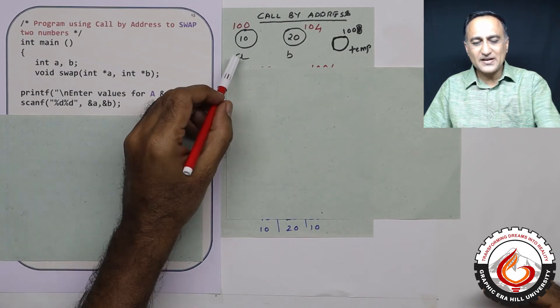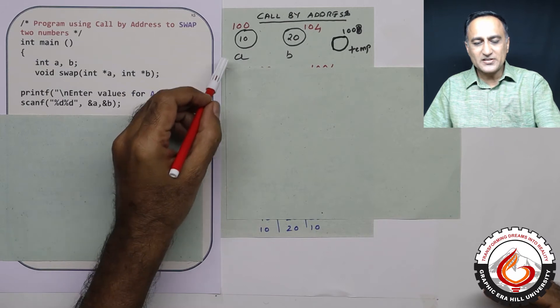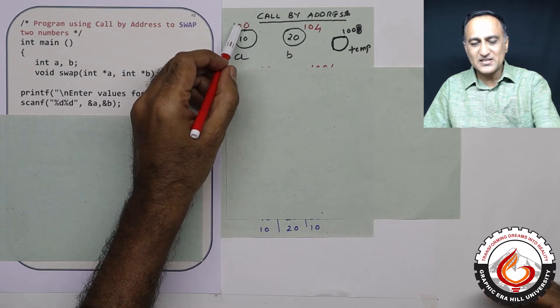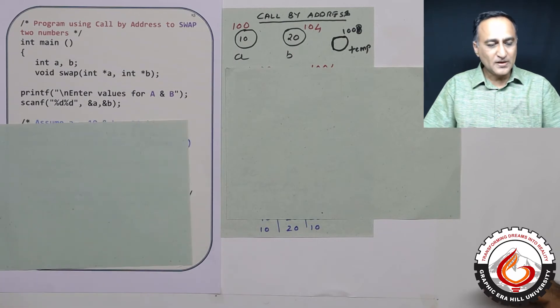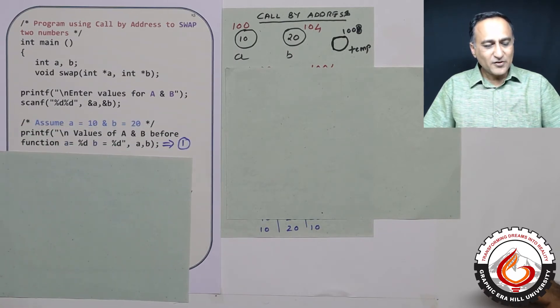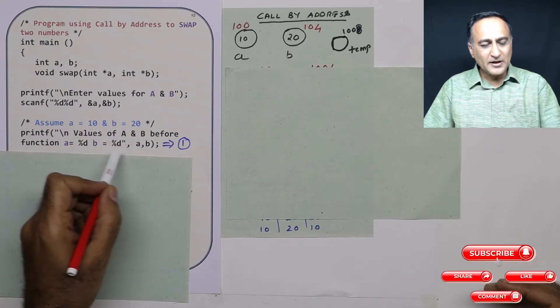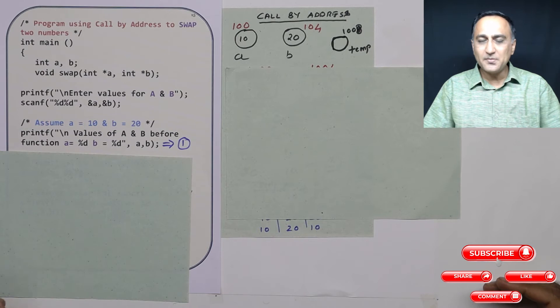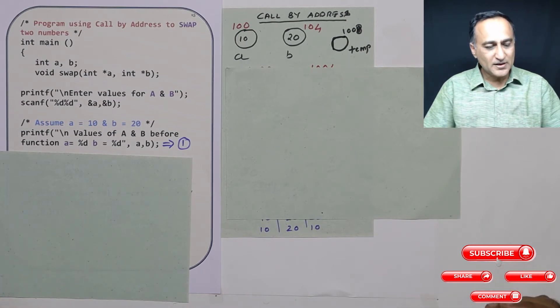This is how I will represent a with value 10, b with value 20. Let us assume a resides at memory address 100, b resides at memory address 104. Then after I have given the values of a as 10 and 20, I am trying to print the values of a and b. So it's simply going to print 10 and 20 on the output screen.